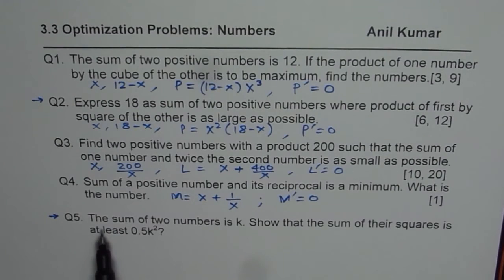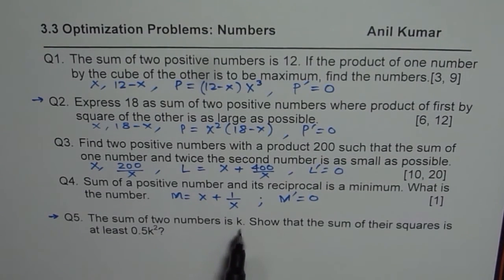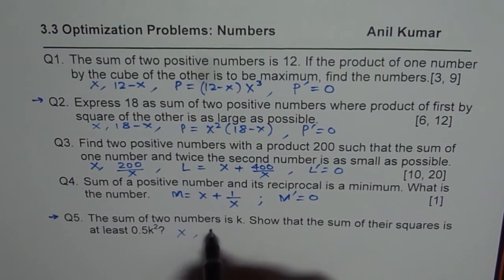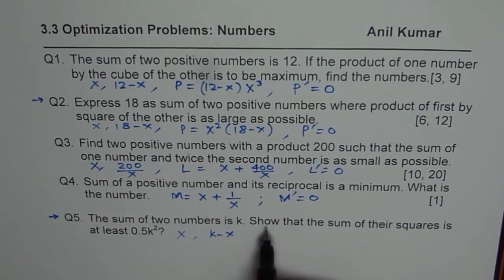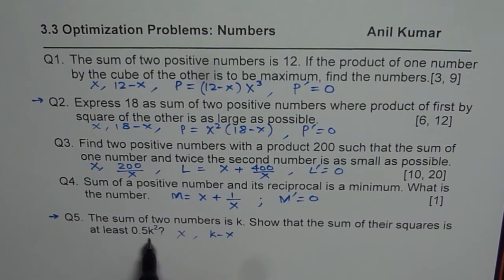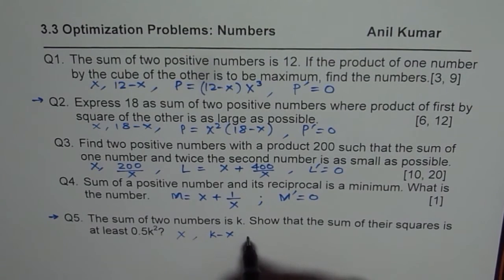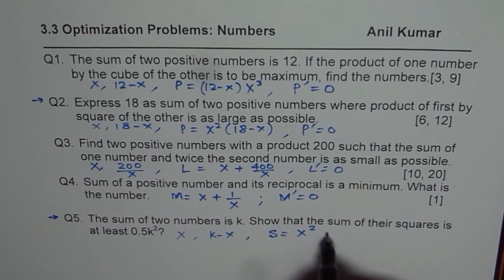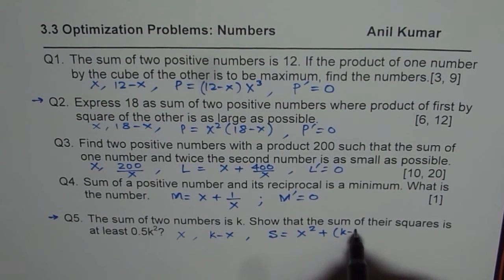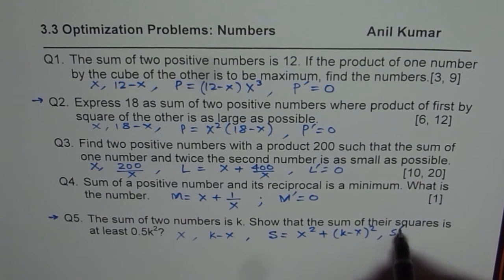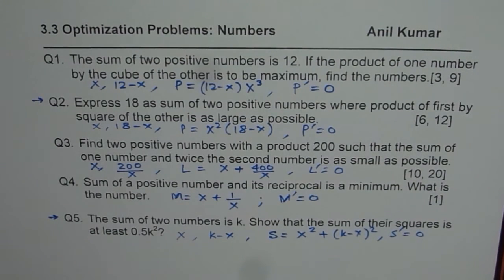The last one: the sum of two numbers is k, so one number is x and the other is k − x. Show that the sum of their squares is at least half k squared. The sum of their squares equals x² + (k − x)², which has to be minimized. Equate the derivative to zero to find the minimum sum.